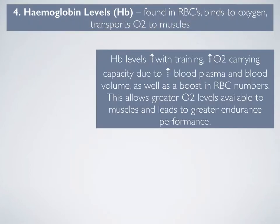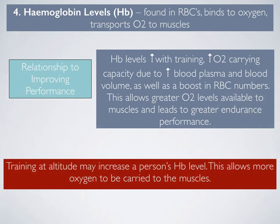Hemoglobin levels: hemoglobin is found in red blood cells. It binds to oxygen and transports the oxygen to the muscles. Hemoglobin actually increases with training, and so this increases the oxygen carrying capacity of the blood. As a result of training, we have an increased amount of blood plasma and also an overall blood volume, which contributes to an increase in red blood cell numbers. Therefore, more hemoglobin is available, increasing oxygen availability and leading to improved endurance performance.